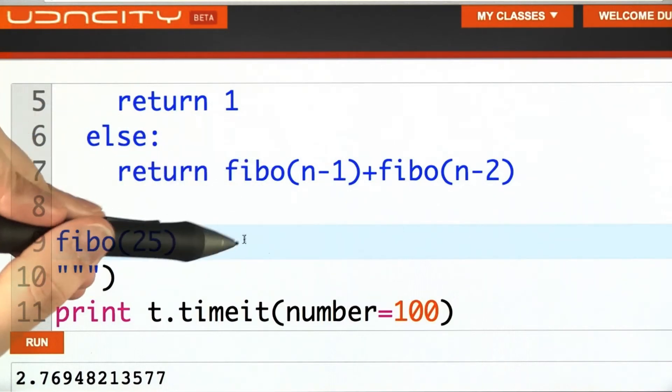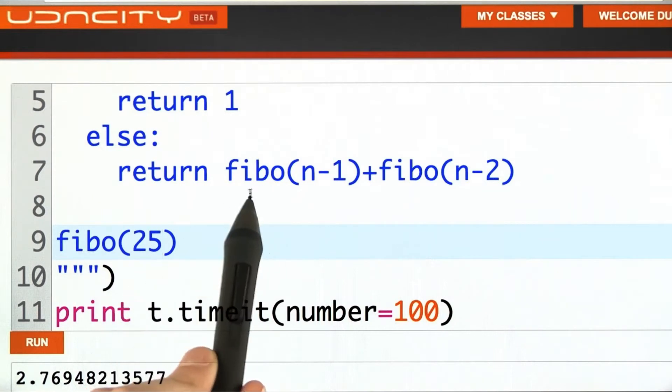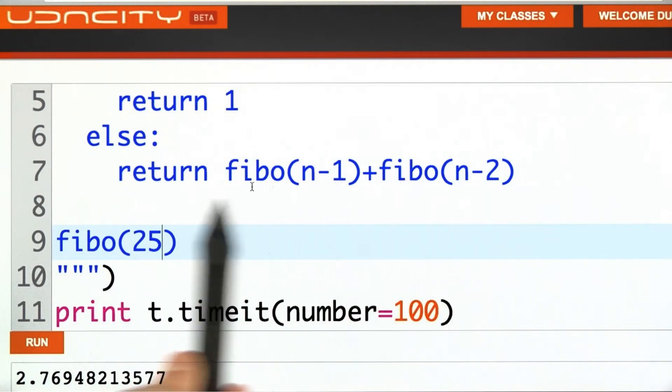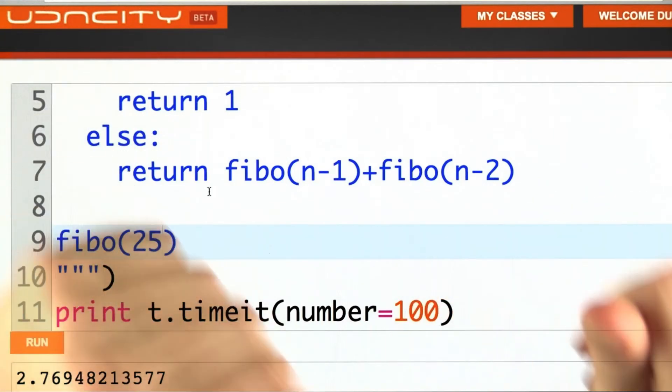And if you think about those trees I drew before, this is unsurprising. If we increase the number by 1, we almost double the work at each step. So this is untenable. We need something faster.